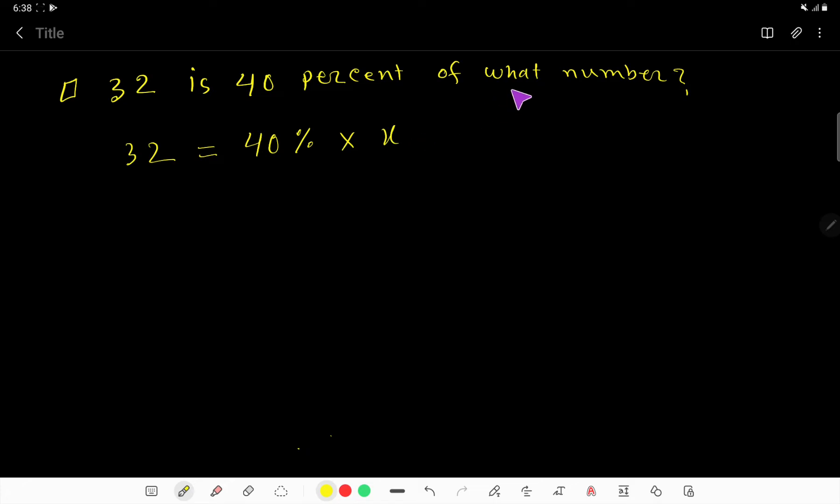The value of x denotes what number. Let us solve: 32 equals 40 percent, which means 40 over 100 times x. If I reduce this...